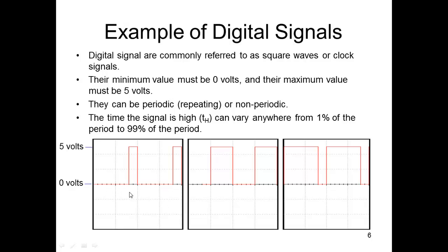Alright, and they have a minimum of zero and their maximum would be five volts. So the x-axis would be time, the y-axis would be volts, and the minimum value would be zero. If there's a number less than zero, then that's not a digital signal.